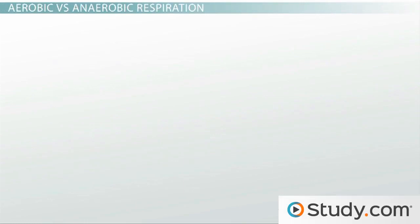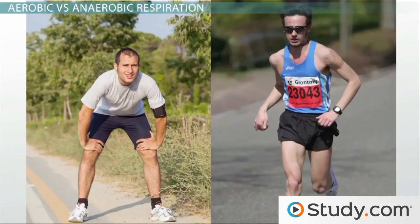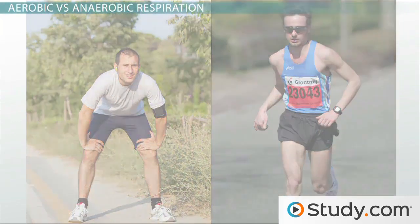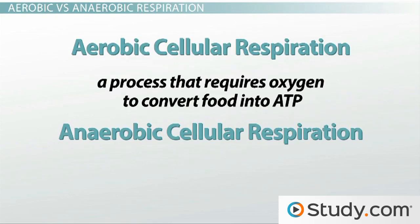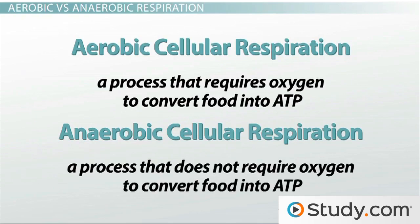So what's the difference between this guy and this guy? There are two types of cellular respiration: aerobic cellular respiration and anaerobic cellular respiration. Maybe you made the connection that 'aero' sounds like air and therefore must have something to do with oxygen. Aerobic cellular respiration is a process that requires oxygen to convert food into ATP. The prefix 'an' means without.